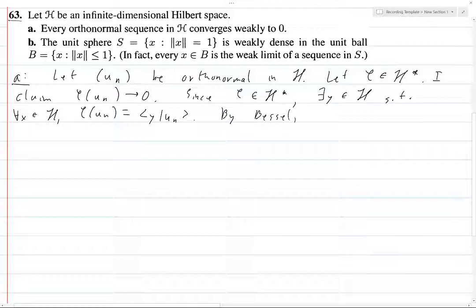By Bessel's inequality, the sum from one to infinity of the norm of y inner product with u_n squared is less than or equal to the norm of y squared. So this implies that the norm of this inner product goes to zero as n goes to infinity. This goes to zero because phi of u_n equals the inner product of y with u_n. And that's exactly what we wanted to show. So that's A, and that's not too weird, but B is where things start getting weird.